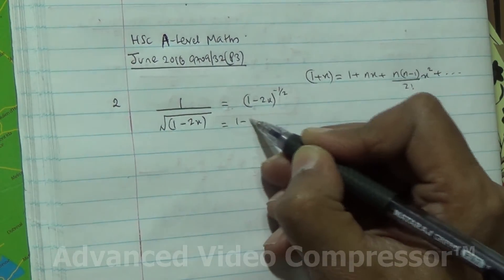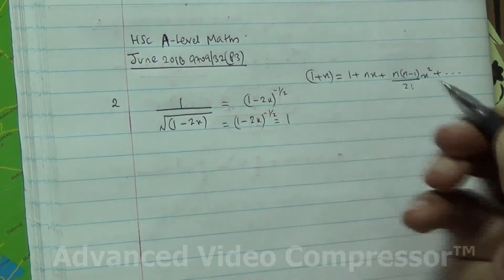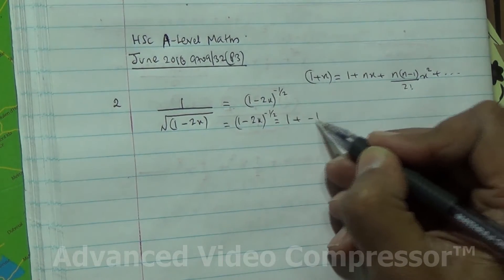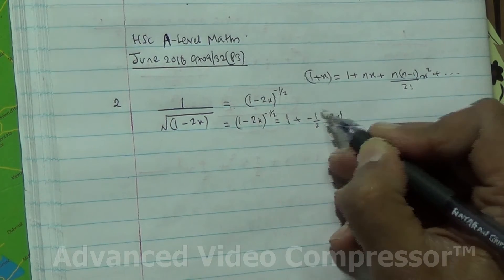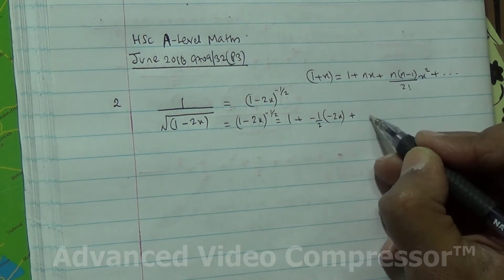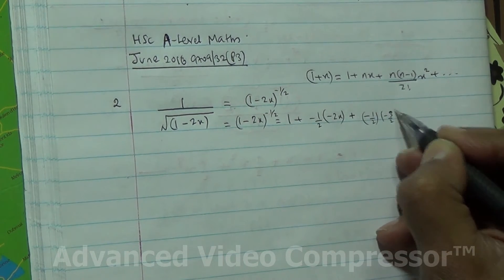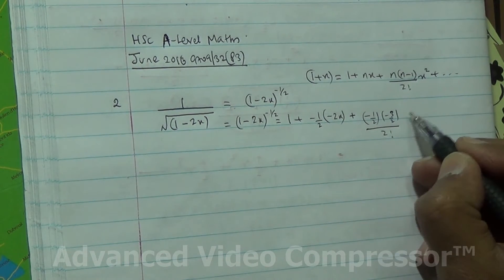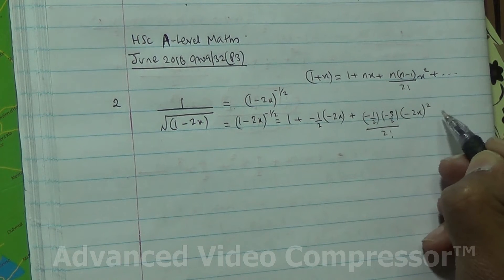In other words, we're saying 1 minus 2x to the power of negative half is equal to 1 plus nx, where n is minus half. So we get minus half times minus 2x, plus n(n minus 1) — so minus half times (minus half minus 1), which is minus 3 over 2 — times minus 2x, all squared.